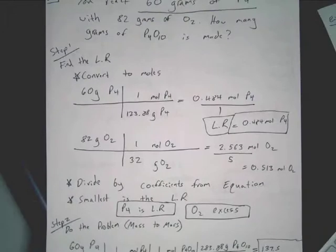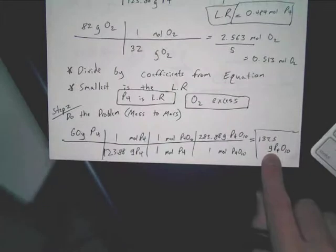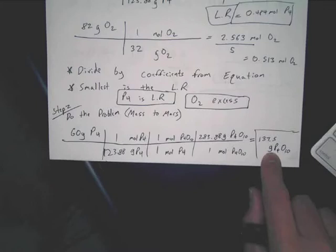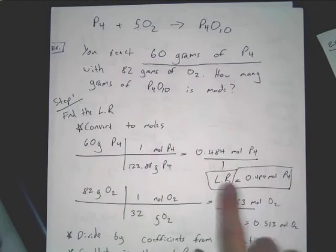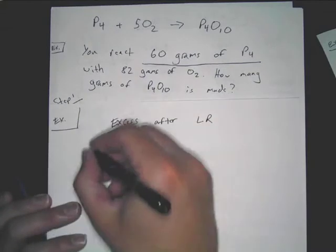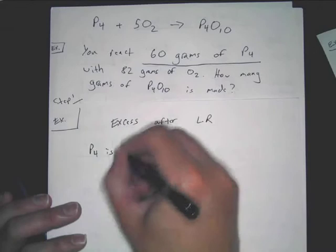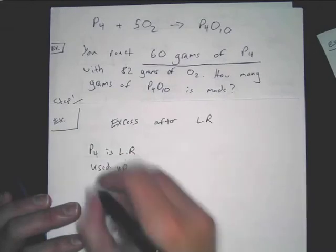And you realize that we have 137.5 grams of P4O10 that's created. We also know that our P4 is limiting reactant, so it is used up completely.